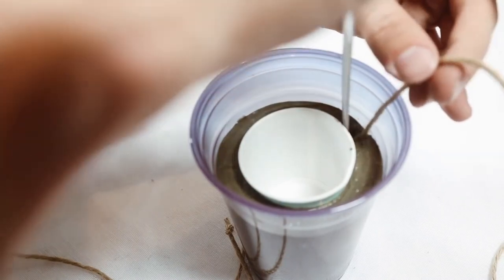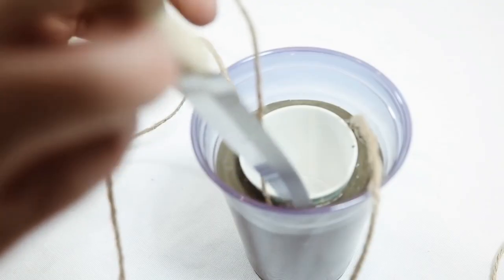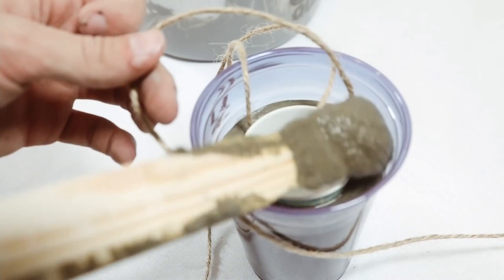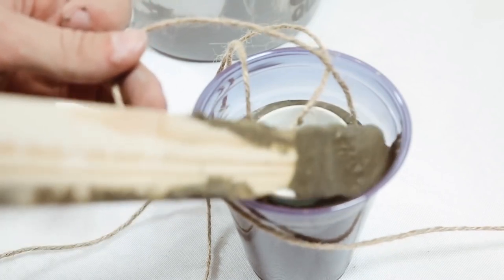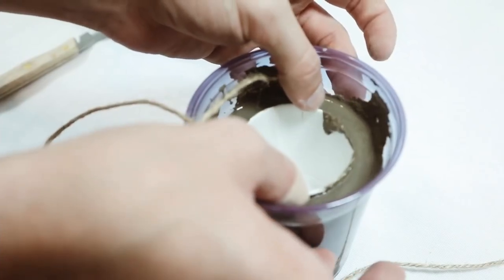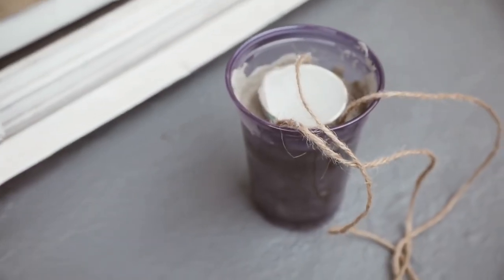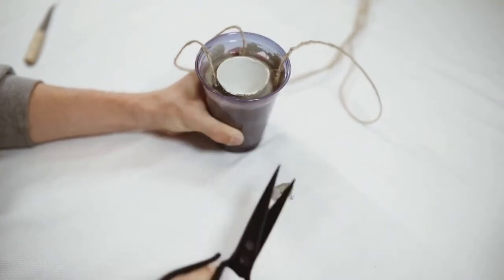The knots are basically going to be like extra support, so once we press this down into the concrete, the knot is covered in cement and allows it to not be pulled out. If it's just a string, you could imagine being able to pull the string right out, but that knot is just extra reinforcement.